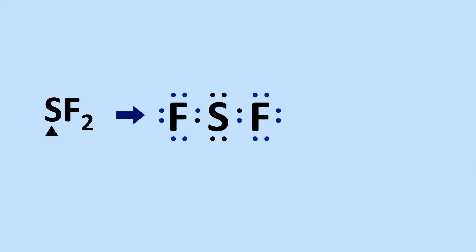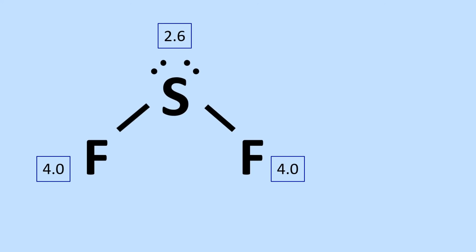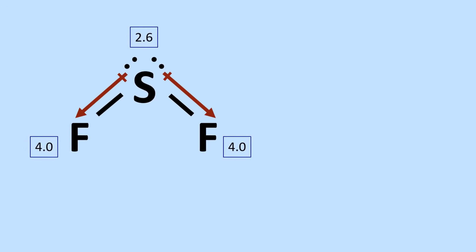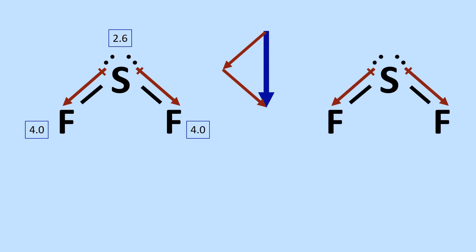Let's look at a less familiar molecule, sulfur difluoride (SF2), with sulfur in the center. The Lewis structure shows two lone pairs on the sulfur, and so it is a bent and therefore non-symmetrical molecule. The electronegativity differences in the fluorine-sulfur bonds show a large bond polarity, but this time pointing toward the outside atoms, the more electronegative fluorines. Adding the bond polarity vectors again gives a large dipole, with sulfur partially positive and the fluorines partially negative.